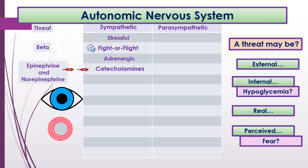You have beta receptors throughout your whole body — in your eyes, lungs, vessels, heart, urinary system, digestive system, bladder, and uterus. When you go into the sympathetic state, you're going to release these catecholamines that will react with these beta receptors to cause a response to get your body ready to fight something or run away from this threat.